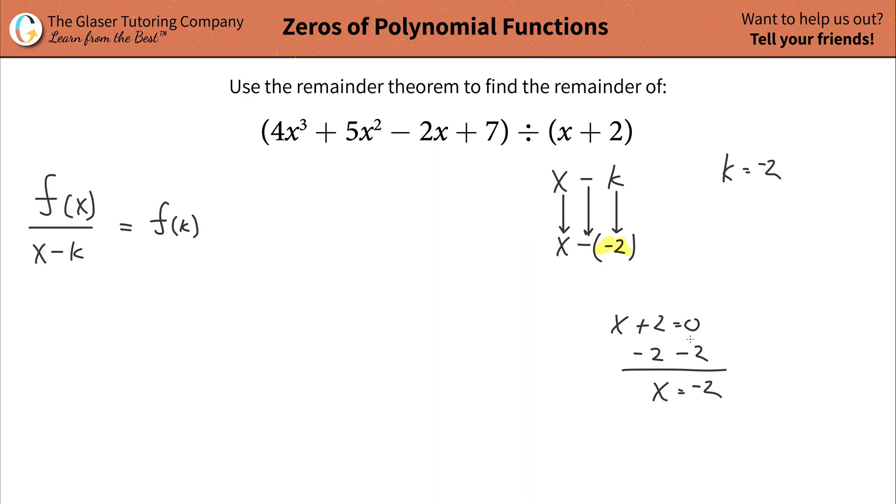So now what we're going to do is now that we found the value of k, k was negative two, we're going to then take that value of negative two now, and plug it in for every single x in your function. And we're going to evaluate it. In other words, we're going to solve it when x is equal to negative two. So just plug it on in.